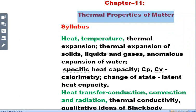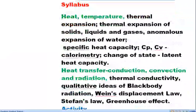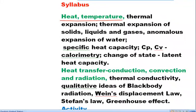We are starting a new chapter: Thermal Properties of Matter. As usual in our first class of any new chapter, we discuss the syllabus and ingredients. In this chapter we will read about heat and temperature, which are loaded here in green color. Then we will move to thermal expansion, types of thermal expansion, and thermal expansion in solids, liquids, and gases.